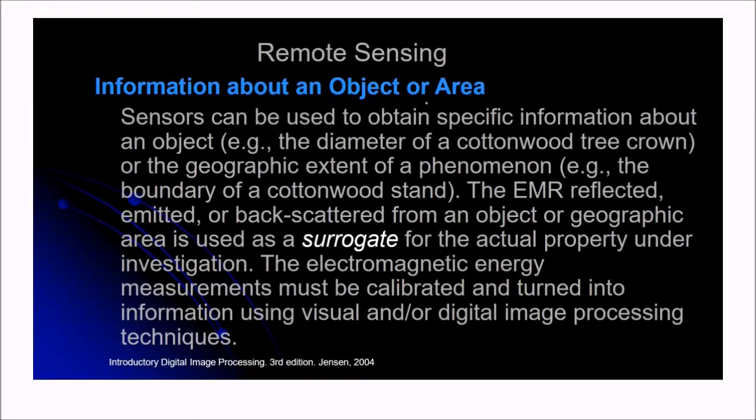Information about an object and area. The sensor can be used to obtain specific information about an object. Say if you want to find the diameter of a cottonwood tree crown or any phenomena. Say you want to find out the boundary of the cottonwood strand, which is a geographic extent of a phenomena.